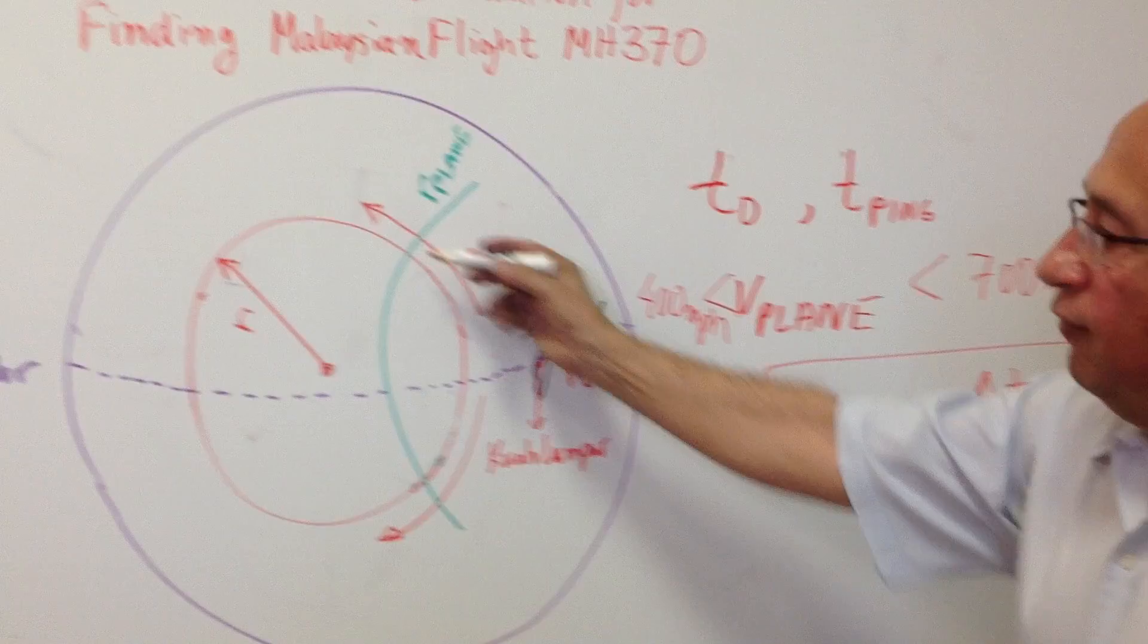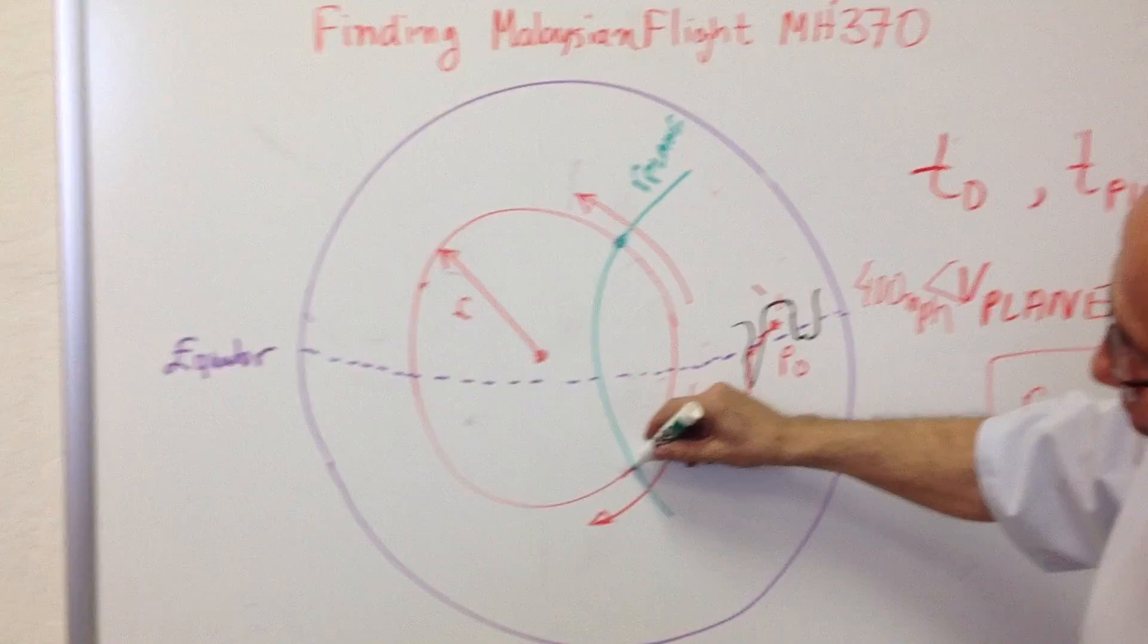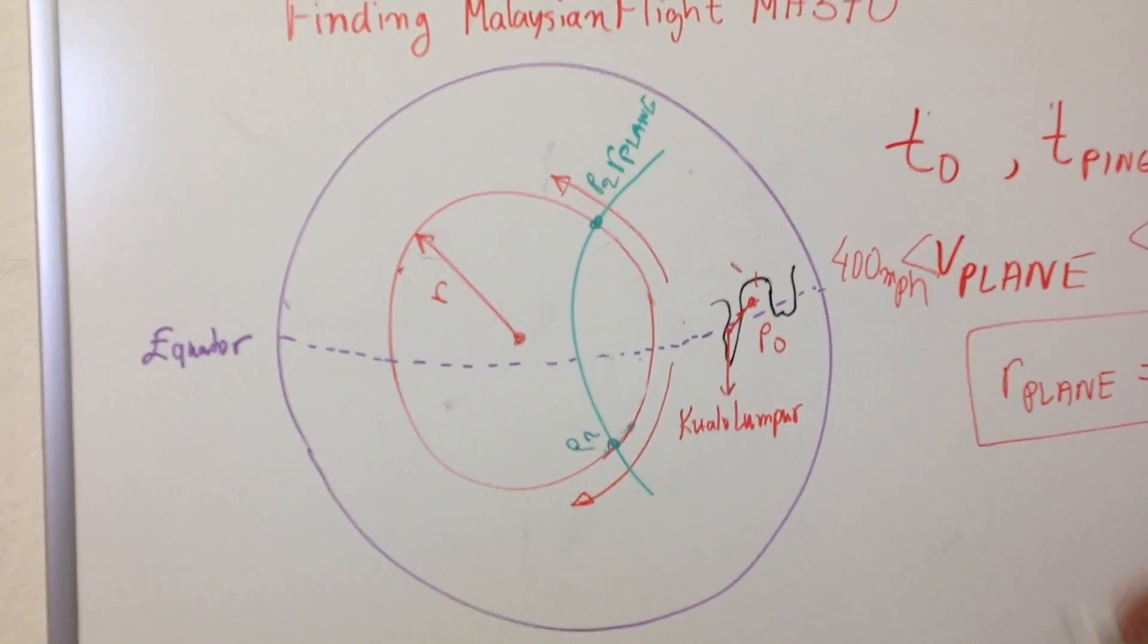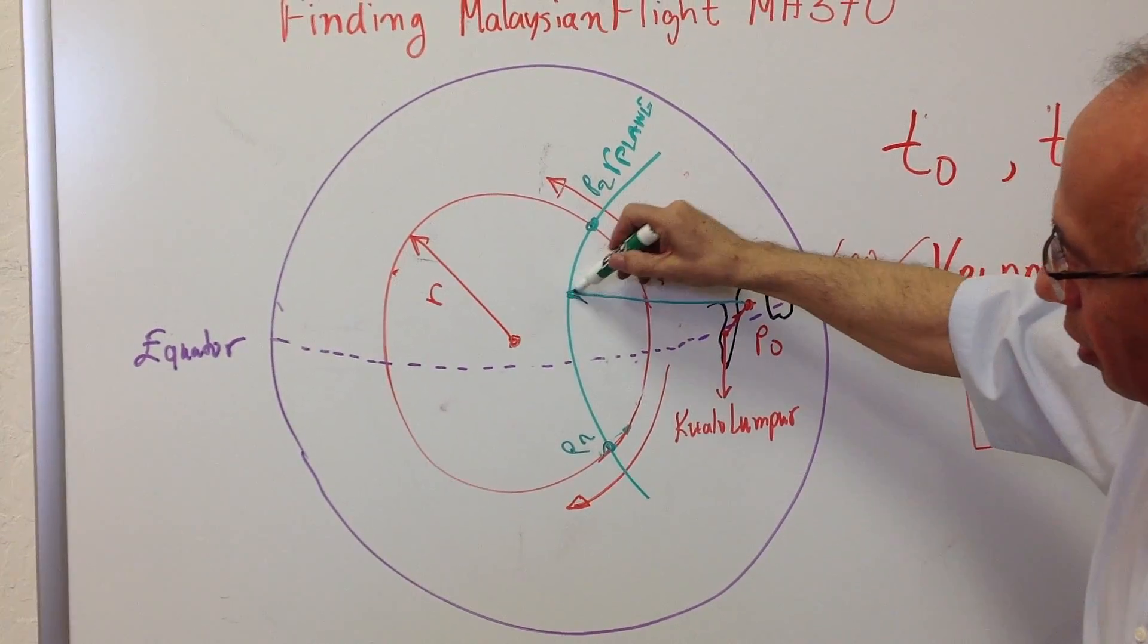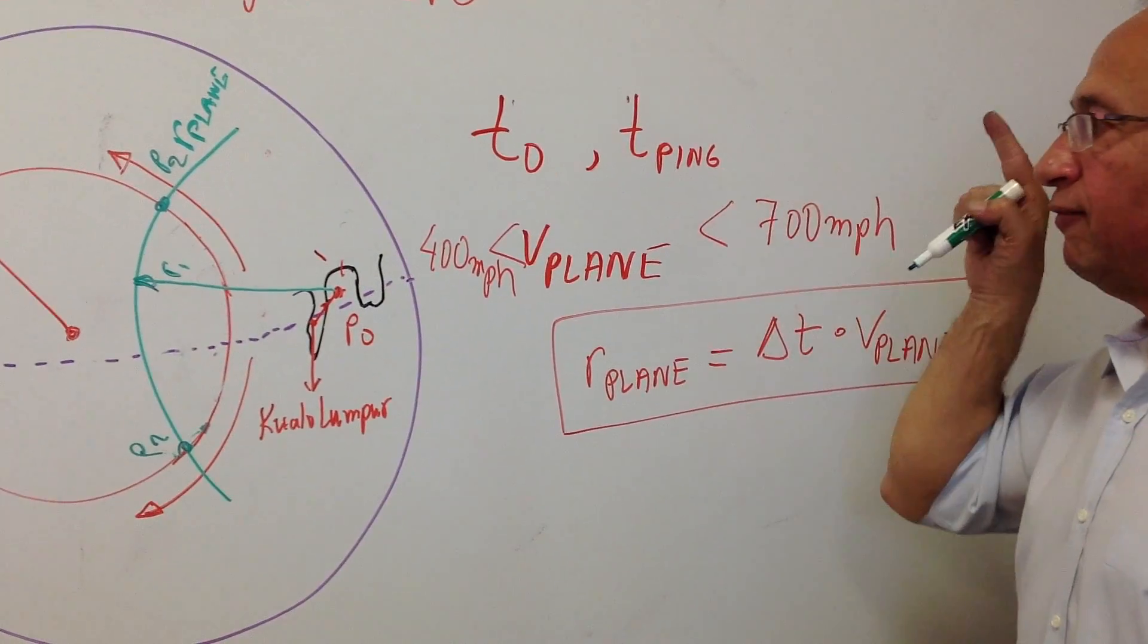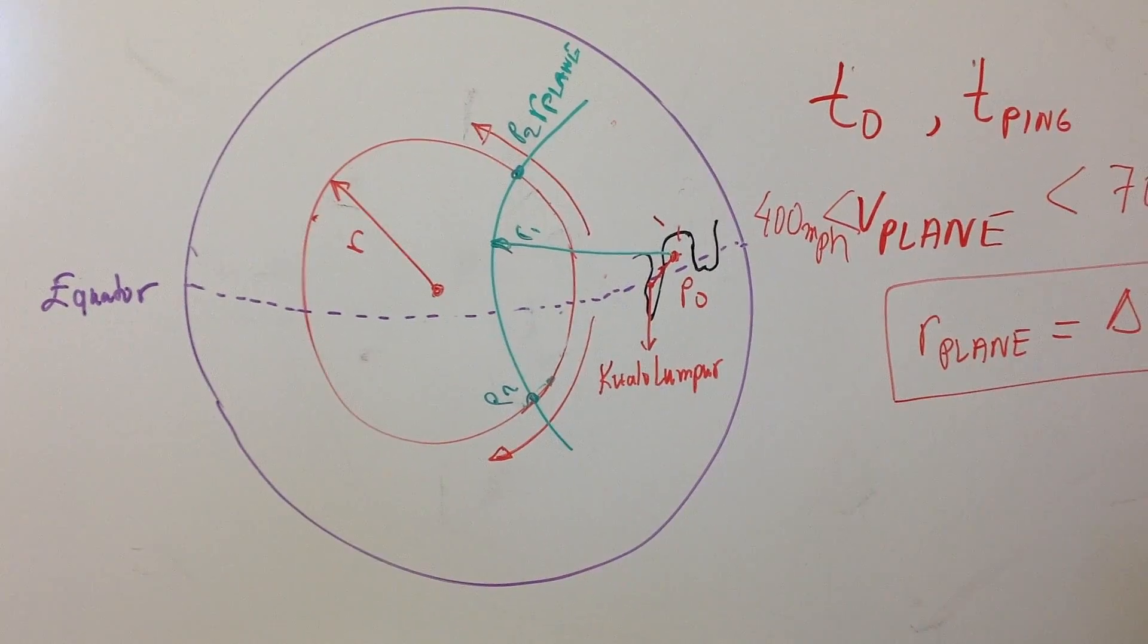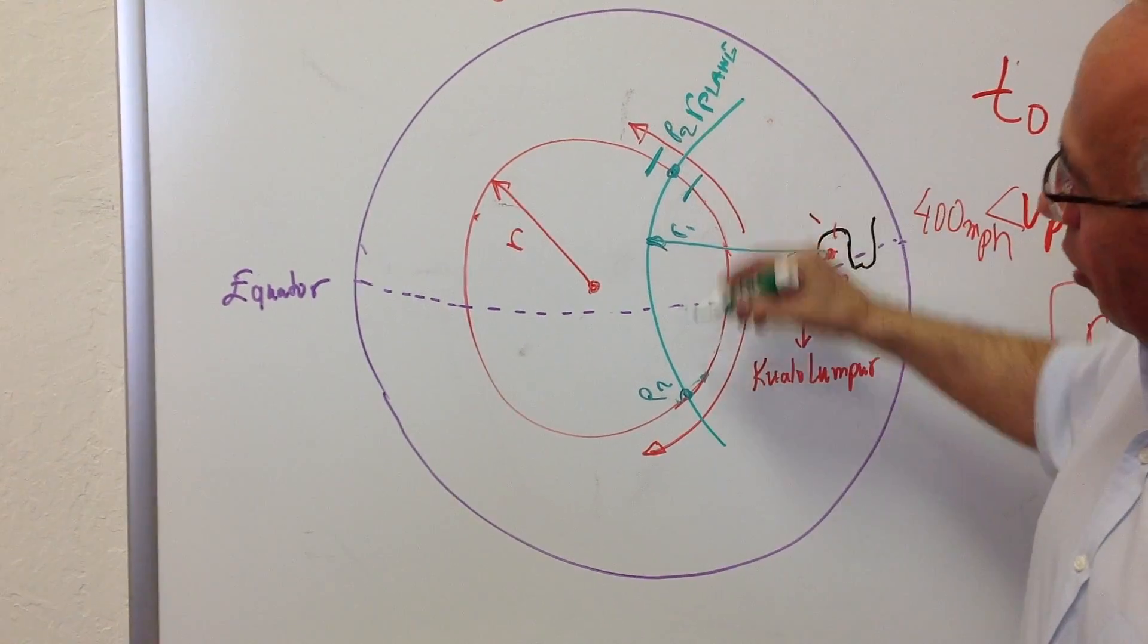If we intersect these two circles, we get two coordinates: P1 in the south in the Indian Ocean, and P2 somewhere else that can be calculated. The radius of the plane circle is given by delta T, the time difference between the last broadcast and when we received the satellite ping data.